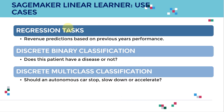Let's take a look at some use cases for Linear Learner. We can use it for regression tasks — for example, predicting next year's revenue based on previous years. We can use it for discrete binary classification — does my patient have a disease or not? And we can use it for multi-class classification — should an autonomous car stop, slow down, or accelerate? Those are three different categories the model can learn.